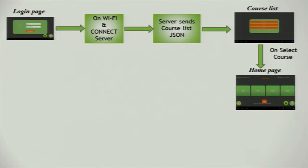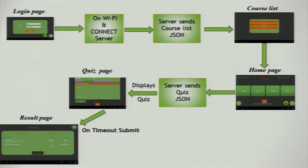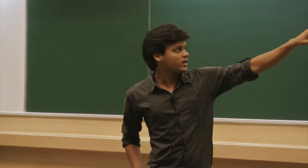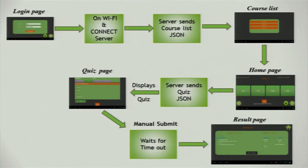The student selects the course they are currently in and is taken to the home page. If the instructor launches a quiz, the student presses the quiz button; it sends a request to the server and downloads the quiz as JSON. After the quiz is conducted, there are two cases: either the student submits manually, in which case they wait for the instructor to end the quiz, or when time runs out it will directly display results with scores, correct answers, and whether each answer was correct or wrong.